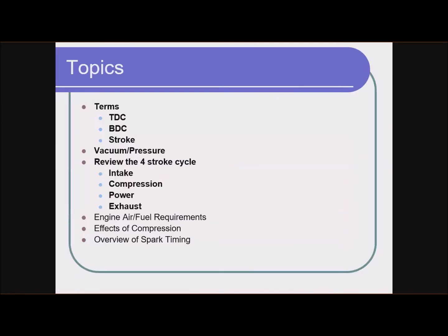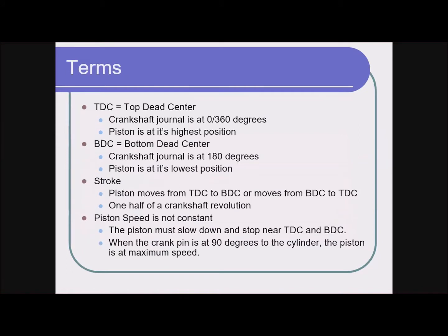You should remember we were talking about these terms: top dead center, bottom dead center, what a stroke is. We started talking about vacuum and pressure and then into the four-stroke cycle. We did intake and compression in a fair amount of detail. Top dead center — crankshaft is at the very top, zero degrees, piston at its highest position. Bottom dead center — piston at its lowest point, crankshaft journal at 180 degrees. A stroke is when it moves from top to bottom or bottom to top. The speed of the piston is not constant; it comes to a stop at the top and at the bottom.